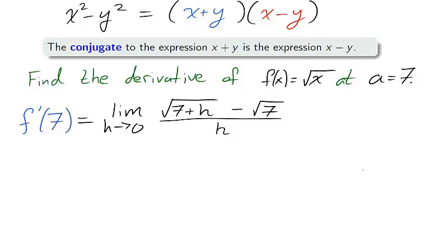And plugging in 7 plus h into f and 7 into f, we end up with a limit where direct substitution won't work as 0 is not in the domain, and we have a function which is simplified. We'll attack this limit by multiplying by the conjugate of the numerator. What is the conjugate of the numerator? We find the conjugate by flipping the middle sign, and we multiply by the conjugate divided by the conjugate, or 1.